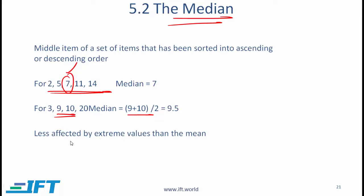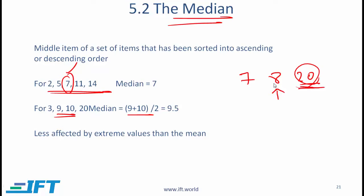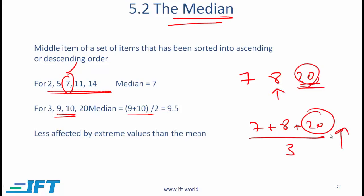The median is less affected by extreme values than the mean. For example, with numbers 7, 8, and 20, the median is 8 — not overly impacted by the 20. However, 20 will have a major impact on the mean, because the mean is 7 plus 8 plus 20 divided by 3, so the average number goes up significantly.